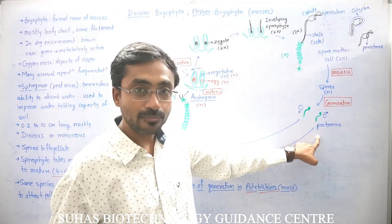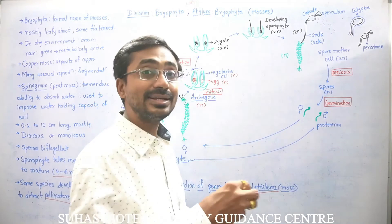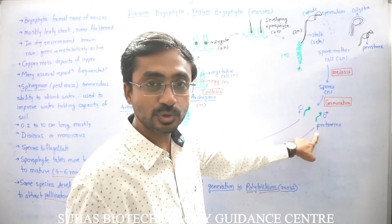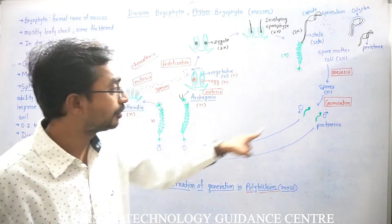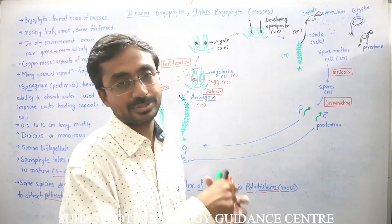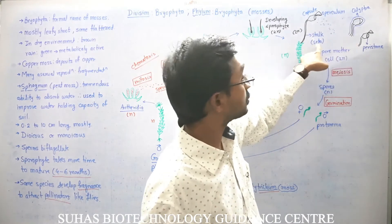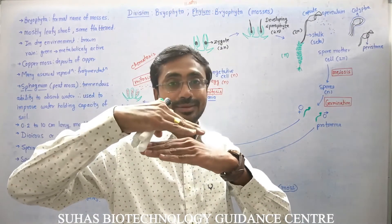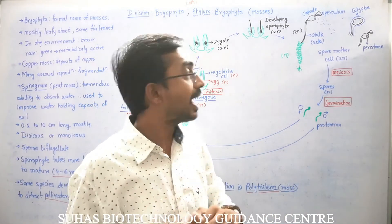When spores germinate, they initially create a protonema, which is the developing gametophyte — since the spores are haploid, the protonema is also haploid. From the protonema, either a male or female plant is formed. In many species, the sporophyte capsule and seta region are covered by a calyptra, which is an outer protective layer. With maturation, the calyptra disappears, allowing the operculum to open and release spores.